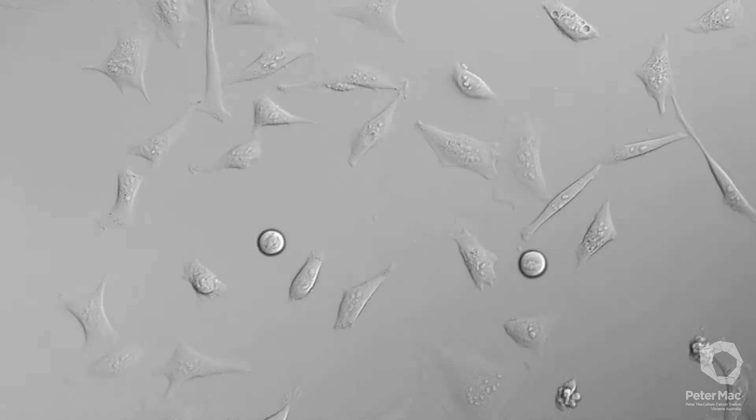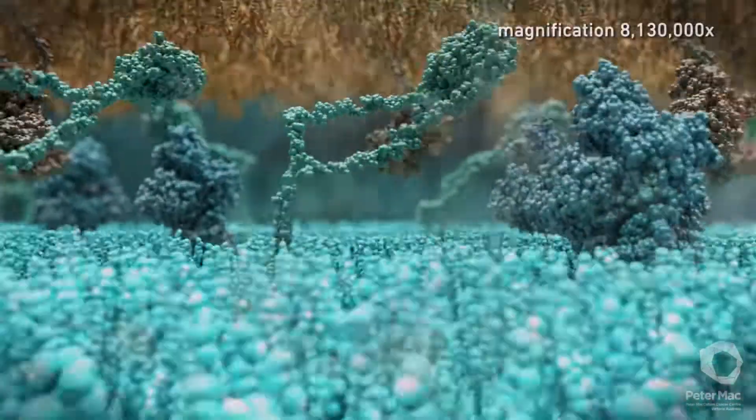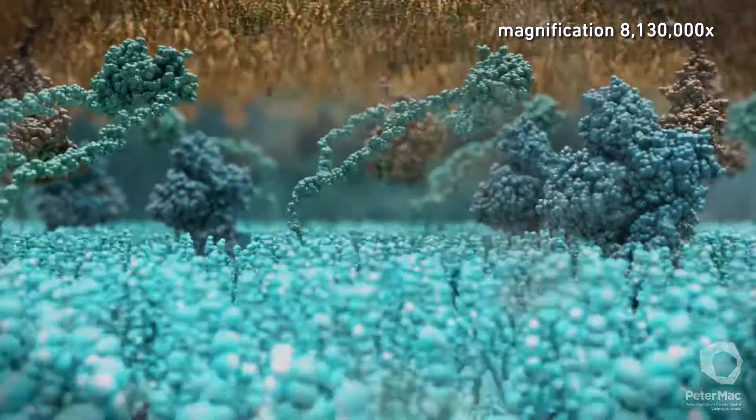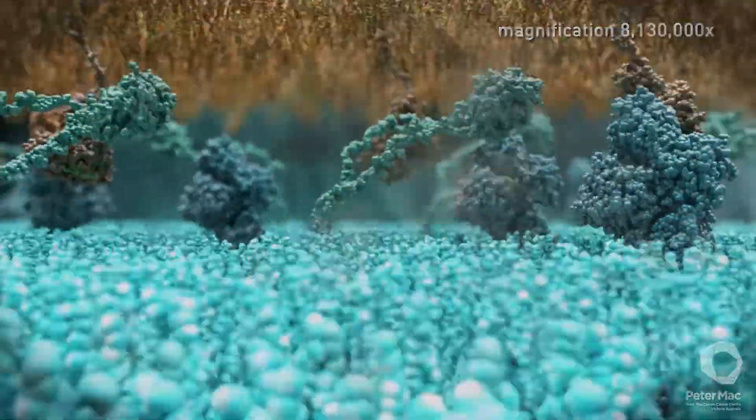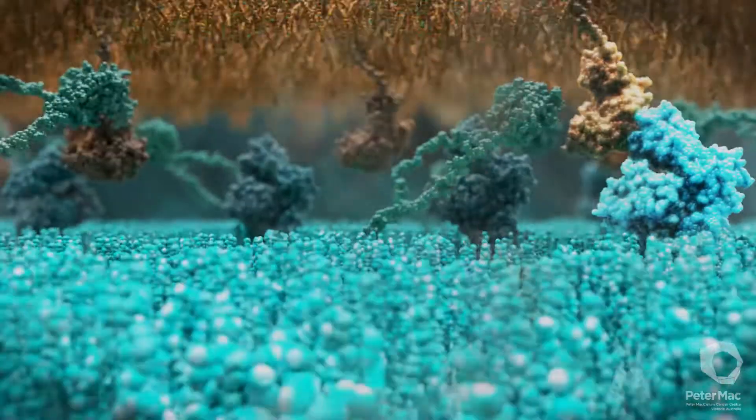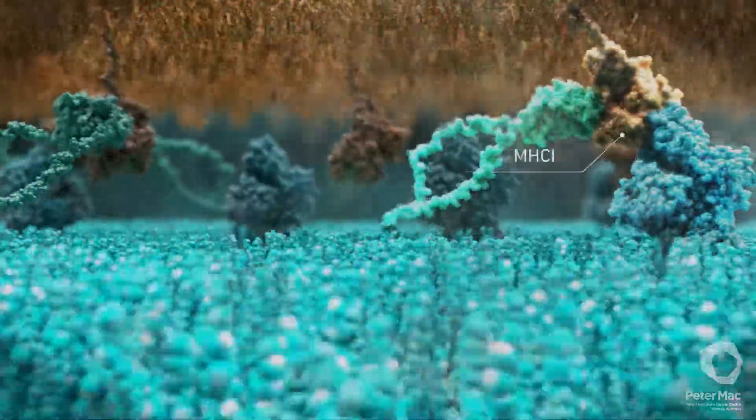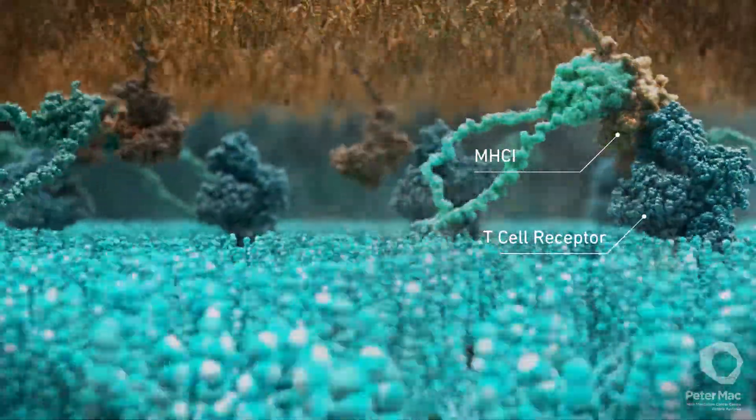So why doesn't our immune system recognize and kill them? Cancer cells can develop many clever ways of hiding from our immune system. One way they do this is to avoid recognition by killer T-cells through MHC1 and the T-cell receptor.